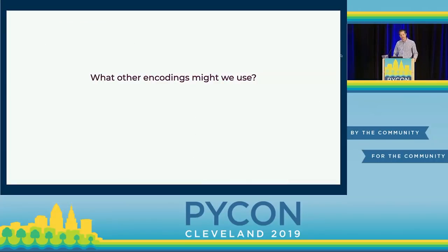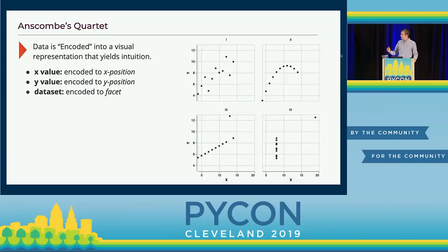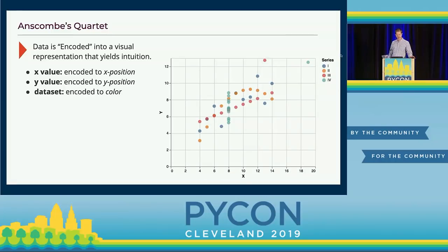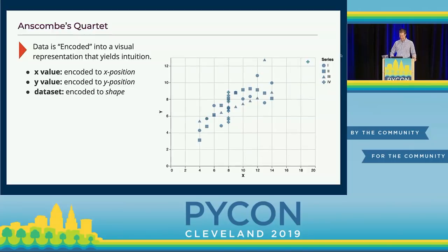So this is an encoding — a way we've transformed the data from numbers into visual properties. What other encodings might we use? We used X value, Y value, and the facet. But we could do something different: instead of the facet, we could encode the different data sets by color. That gives the advantage of having everything on one panel, but it's sort of a muddled plot. What if we do shape? It can be effective and sometimes not. I would argue in this case it's not very effective — it's hard to pull out what's going on.